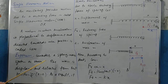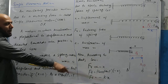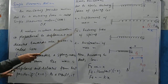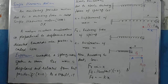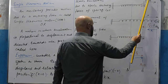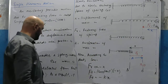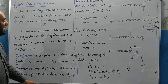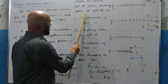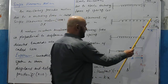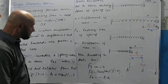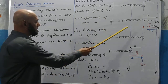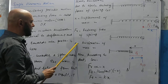Now we start the derivation. Consider a spring-mass system as shown. The mass is displaced and released from the rest position O, causing it to oscillate. Let x be the displacement, FR be the restoring force.